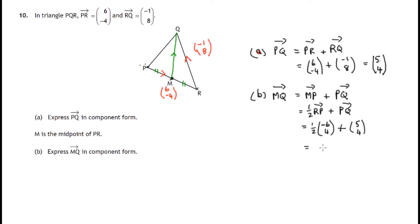So half of the (-6, 4) journey is (-3, 2). That is followed by a journey of (5, 4). So adding the x components, -3 plus 5 will give us 2, and 2 plus 4 for the y components will give us 6. So there's MQ expressed in component form.